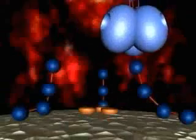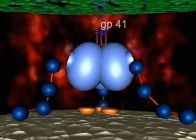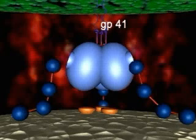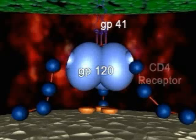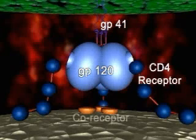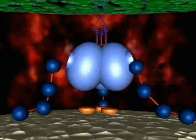Each spike is a trimer of a viral glycoprotein complex composed of a transmembrane glycoprotein, GP41, and a large surface glycoprotein, GP120. The current model of HIV fusion and cell entry requires the participation of CD4 and chemokine coreceptors situated on the surface of the cell membrane.